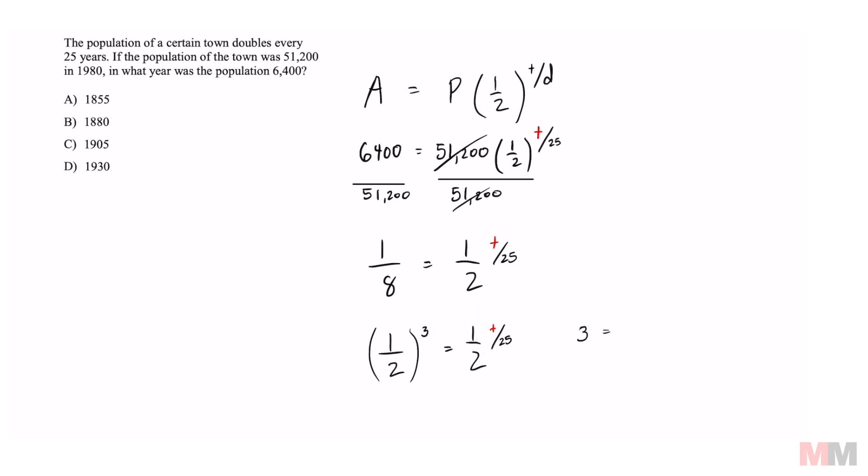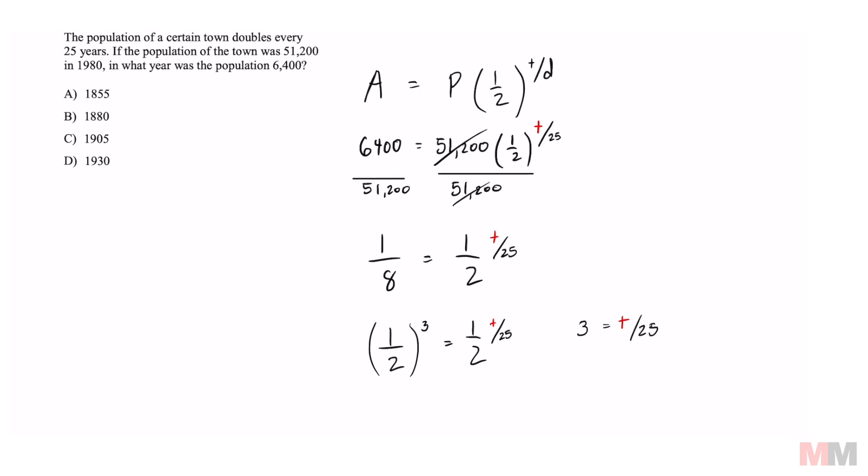It's going to be 3 equals T divided by 25. This is just a single step equation now. Multiply both sides by 25 and we get 75 equals the time it takes for this to get cut in half every 25 years to get 6,400.